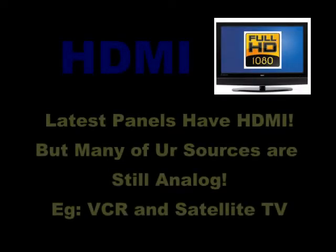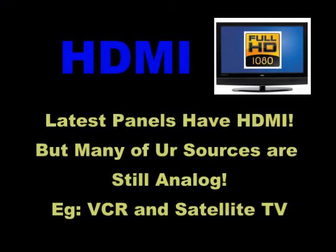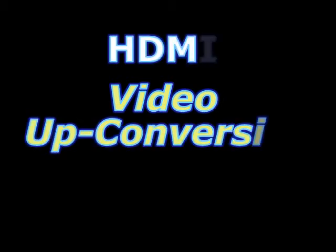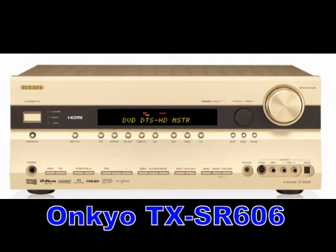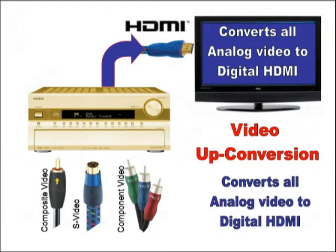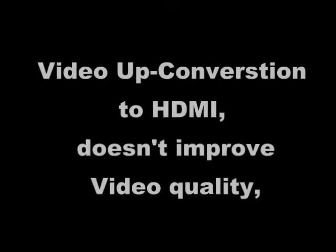Many of the sources are still analog, like VCR and satellite TV, so we go for HDMI video upconversion. All of the analog video formats are converted to HDMI video — like with the Onkyo TXSR 606, which converts all analog video — composite, S-Video, or component — to HDMI.